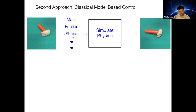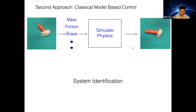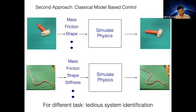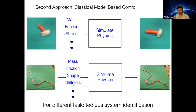What these quantities should be is partly a part of system identification. One trouble with system identification is that for different tasks, there are different system identities. For example, because a hammer is rigid, there is no need to consider non-rigid parameters, whereas if you are manipulating a rope, stiffness becomes an important parameter. Maybe system ID is different for different tasks and it is tedious — but maybe that is okay. Maybe someone can sit down and come up with a general set of system IDs, although it is tedious.